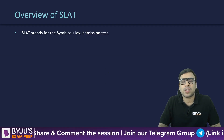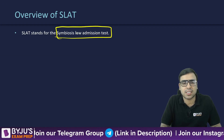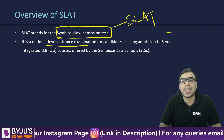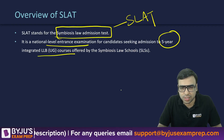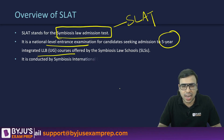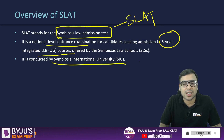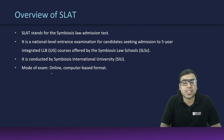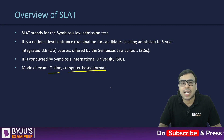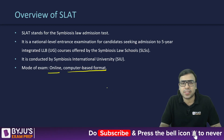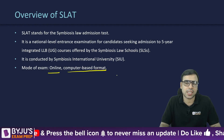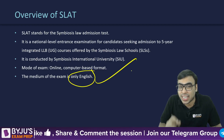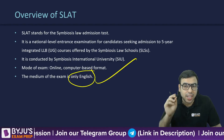SLAT stands for Symbiosis Law Admission Test. It is a national level entrance examination conducted for a five-year LLB undergraduate course. It is conducted by Symbiosis International University (SIU). The mode of examination is online computer-based — you go to a center, are provided a computer, and solve questions there. The medium of examination is only English, so all questions will be in English.